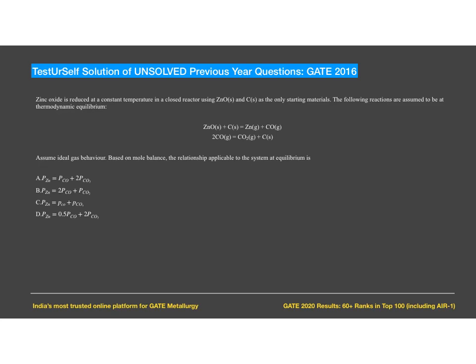In this question, zinc oxide is reduced at constant temperature in a closed reactor using zinc oxide and carbon solid as the only starting materials. The following reactions are assumed to be at thermodynamic equilibrium. Assume ideal gas behavior. Based on mole balance, we need to find the relationship applicable to the system at equilibrium.